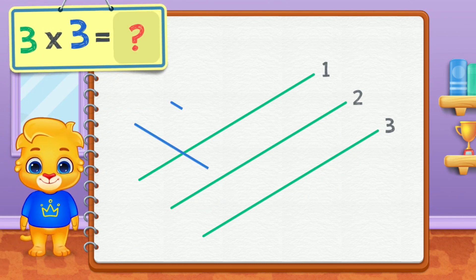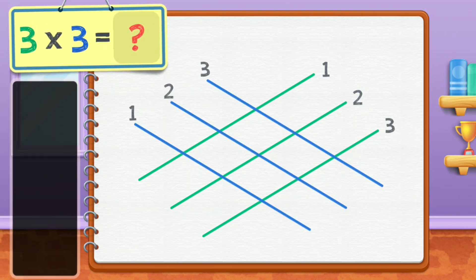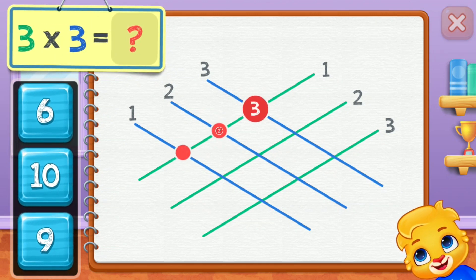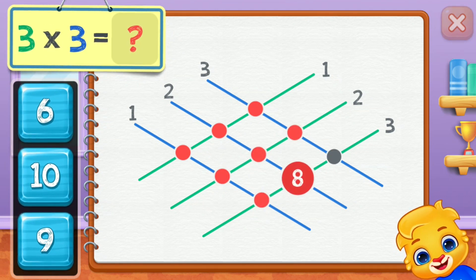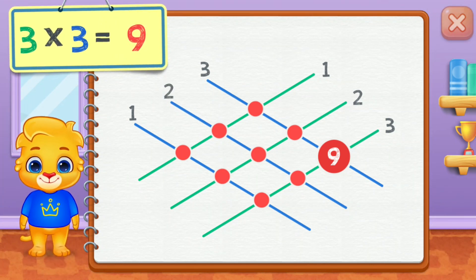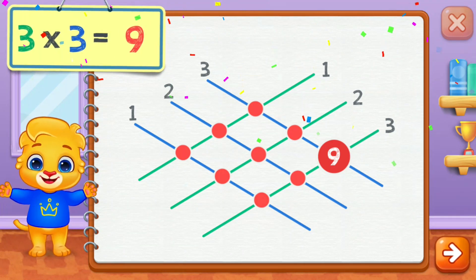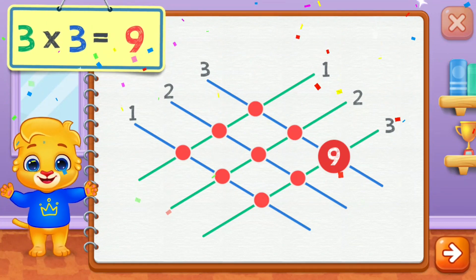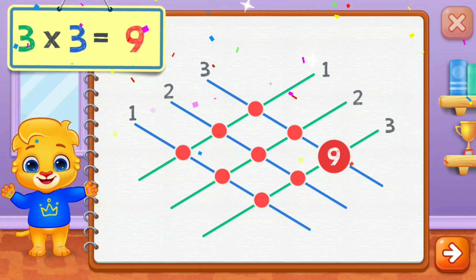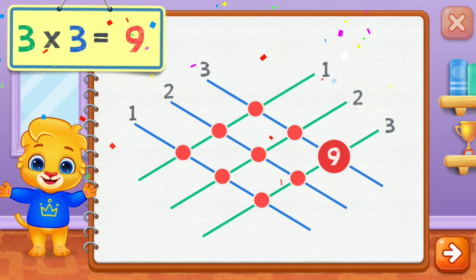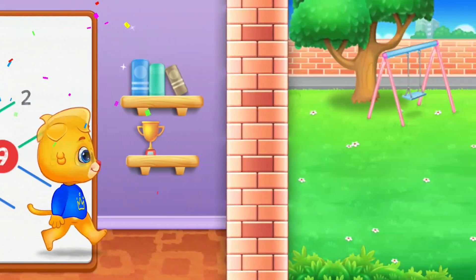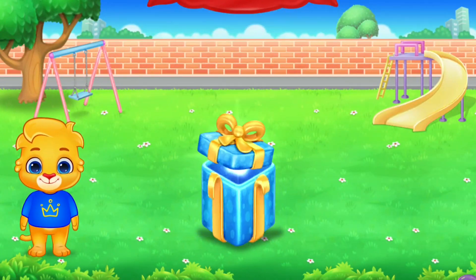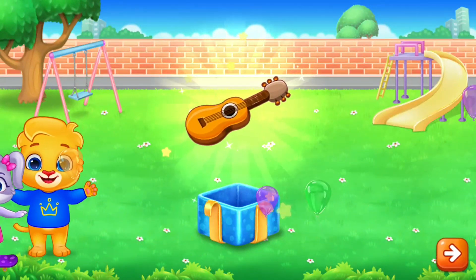Three times three equals... One, two, three, four, five, six, seven, eight, nine. Three times three equals nine.